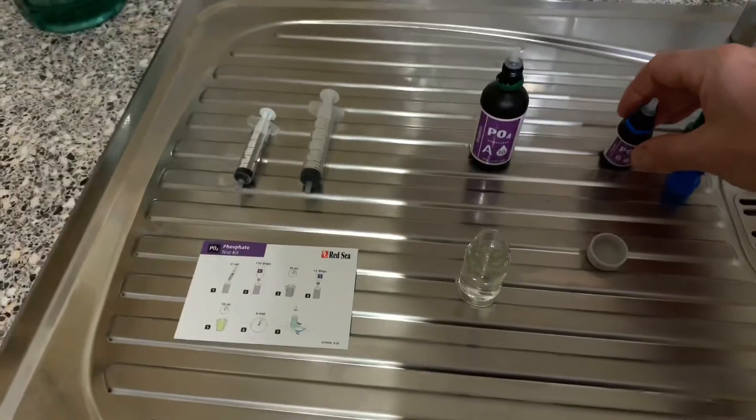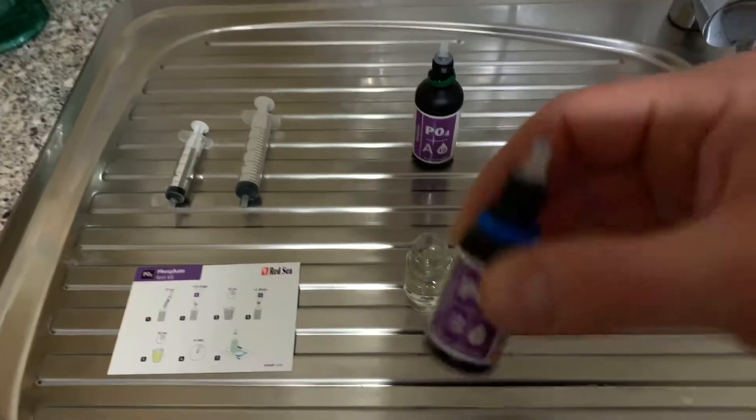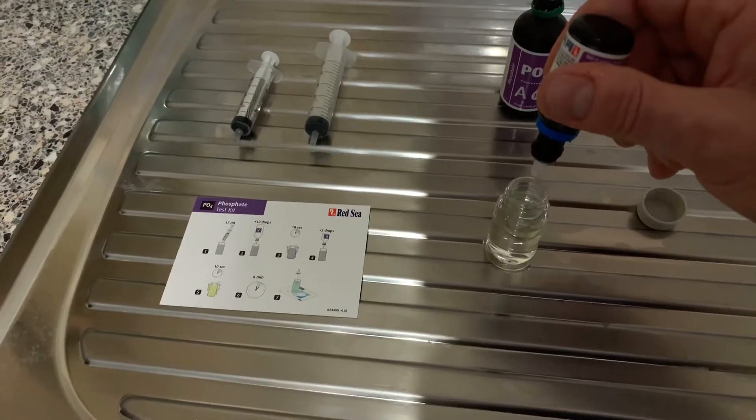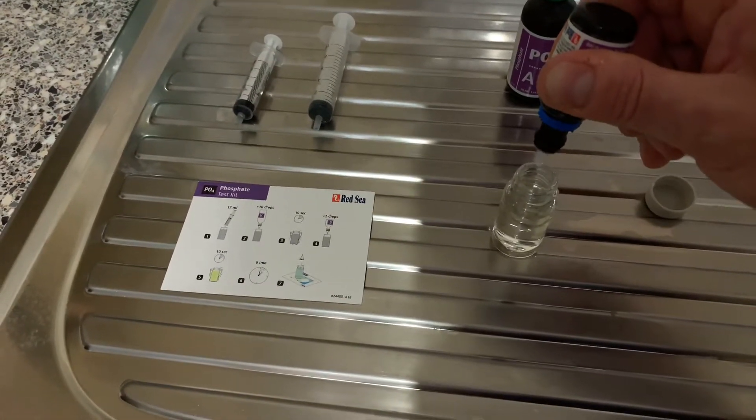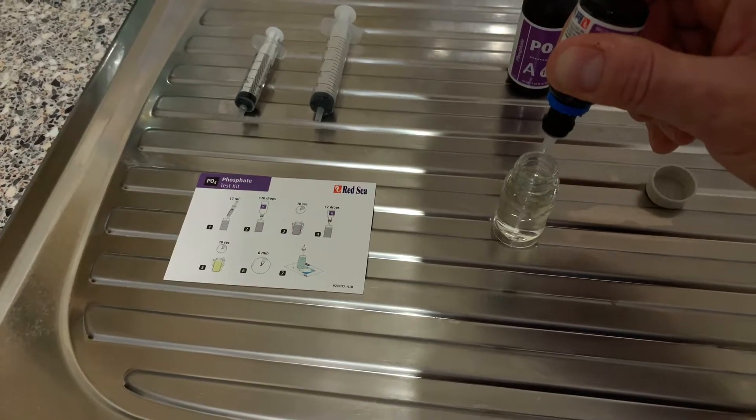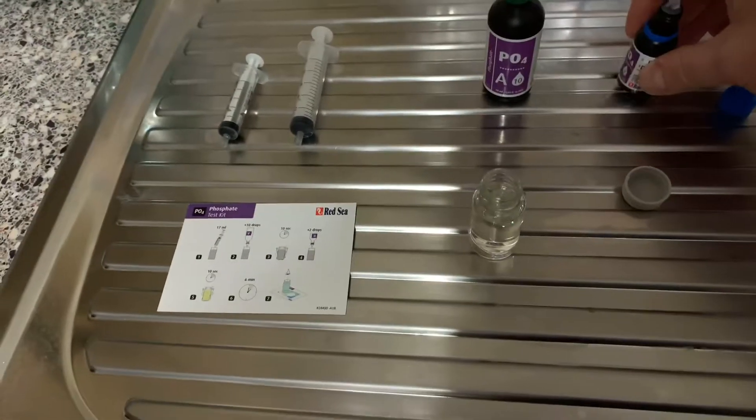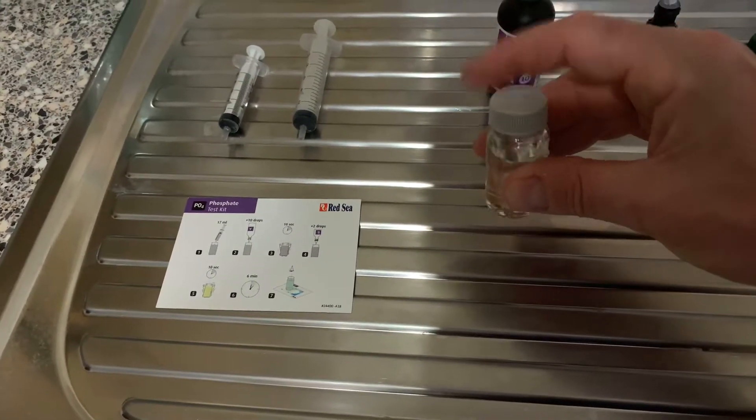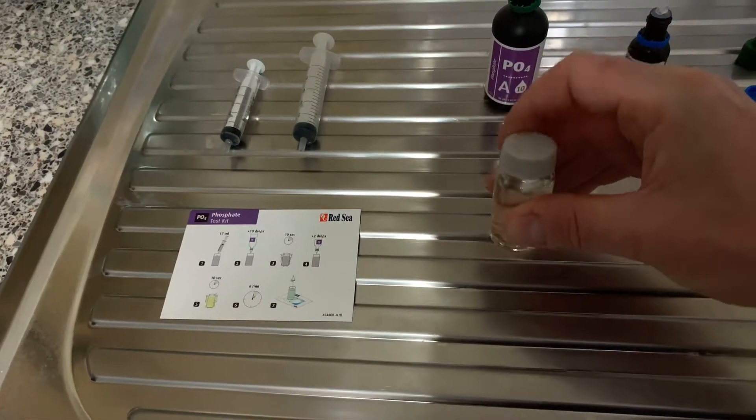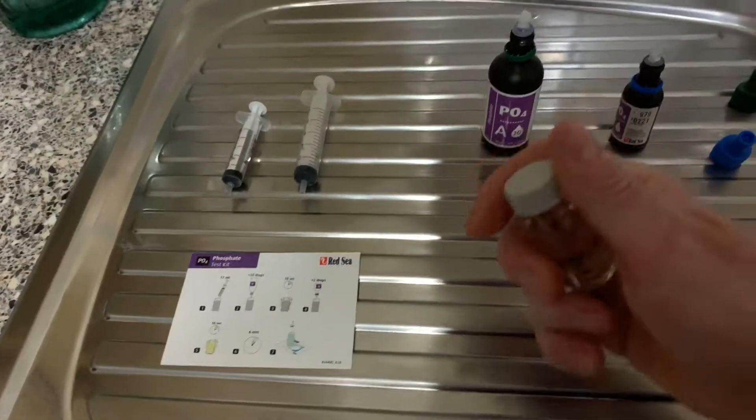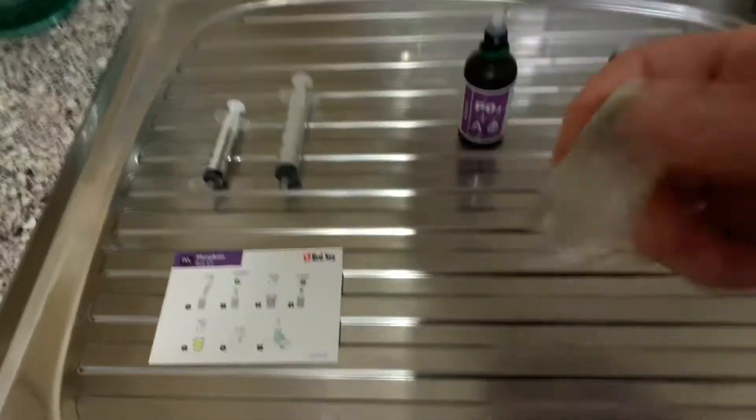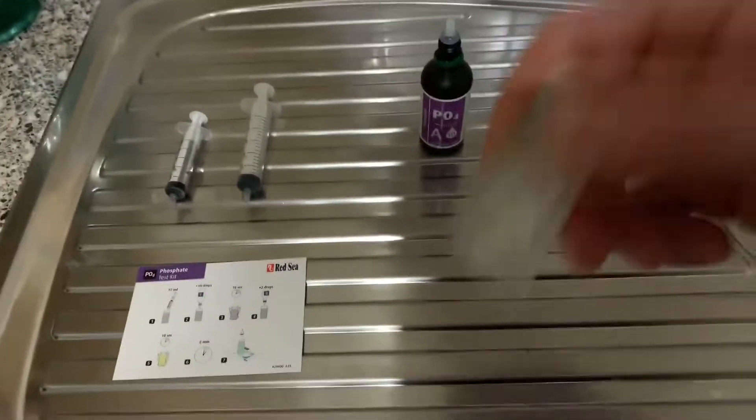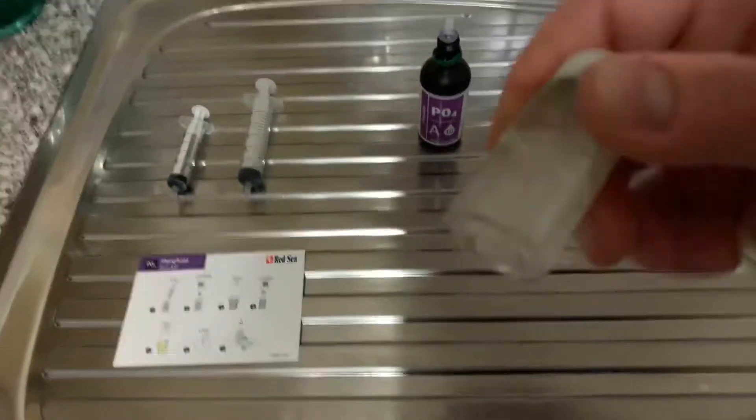Then we'll add 2 drops of Reagent B and get that in there. 1, 2. Then we'll give that a shake for 10 seconds. 6, 7, 8, 9, 10.